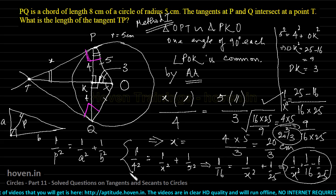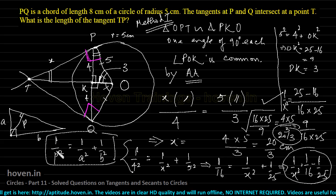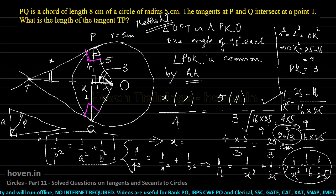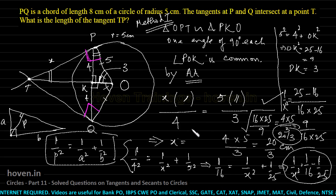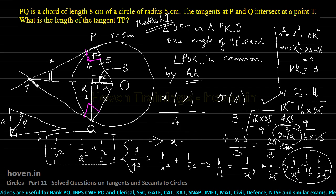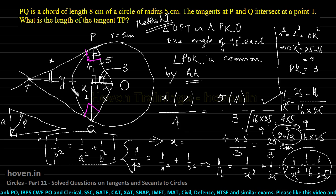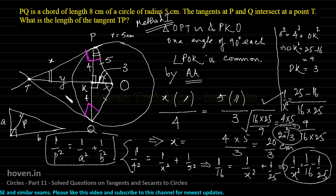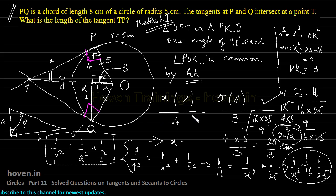Method 2 is the shortest but requires remembering the reciprocal relationship. A third method involves writing TK = y, applying Pythagoras to the smaller triangle and then to the bigger triangle, eliminating y to obtain x. That method is a bit longer but also valid. The same question can be solved in multiple ways.